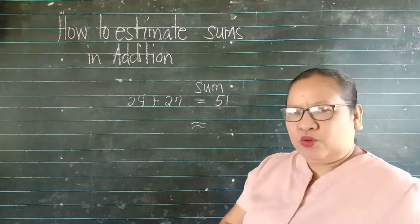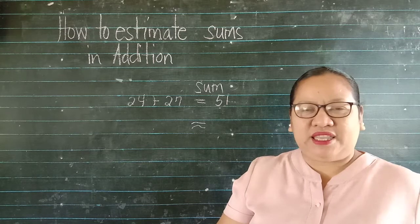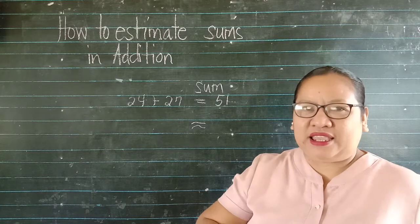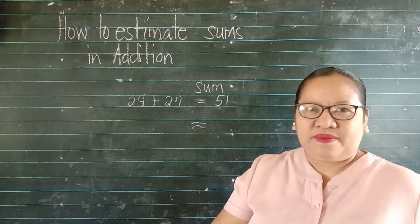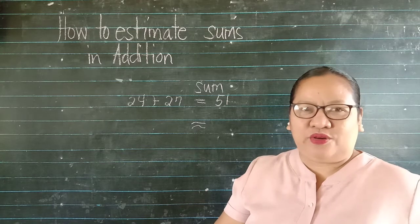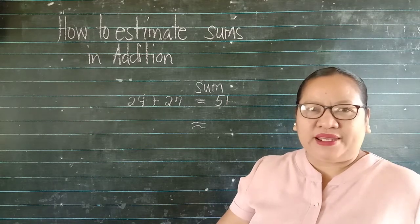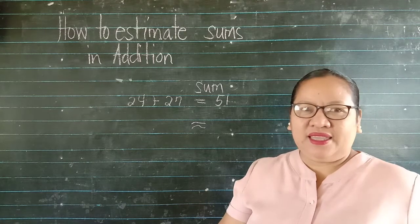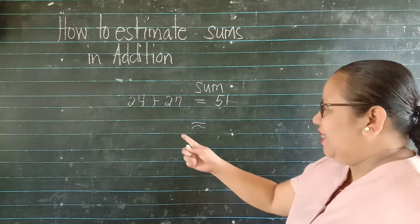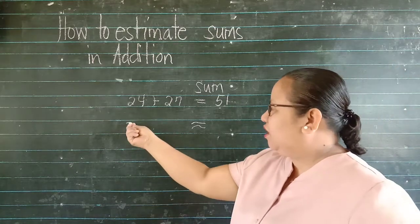Ang rules, ano nga yung rules? If the number is 5, 6, 7, 8, and 9, tataas ng isa yung number na atin ay ka-round off or i-estimate. Kapag 4, 3, 2, 1, 0, ang number ay as is. In this case, 24 to the nearest tens is 20.